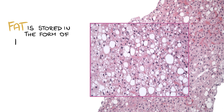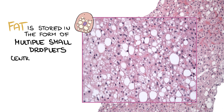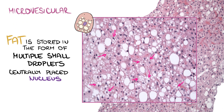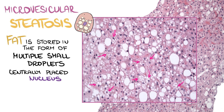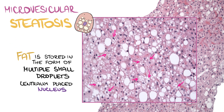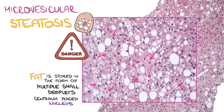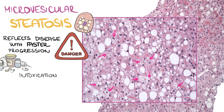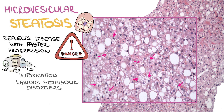If the fat is stored in the form of multiple small droplets with a centrally placed nucleus, we use the term microvesicular steatosis. This subtype is more dangerous, since it usually reflects a disease with faster progression, such as intoxication or various metabolic disorders — for example, congenital mitochondrial defects or Reye syndrome.